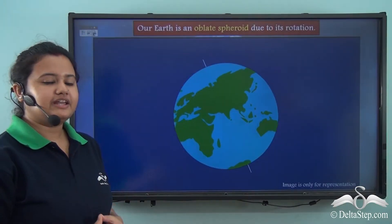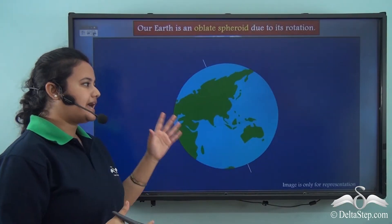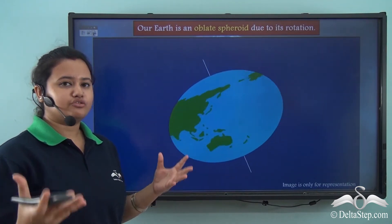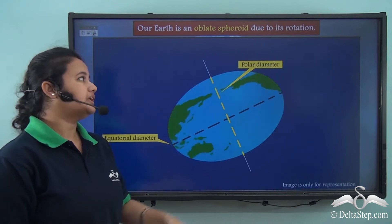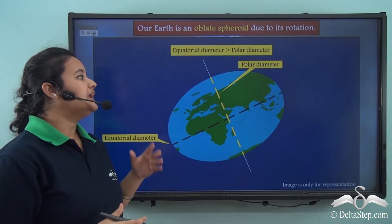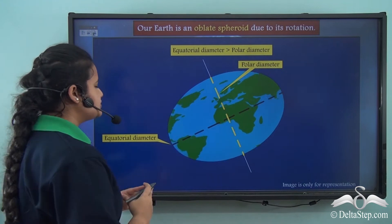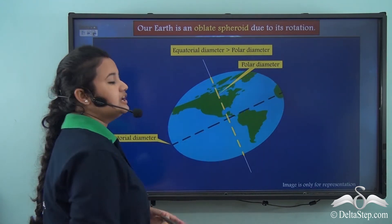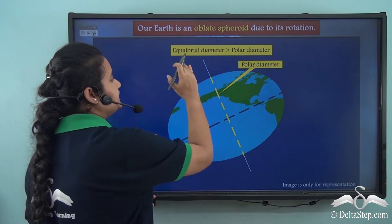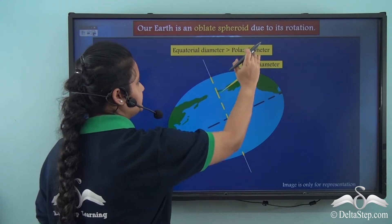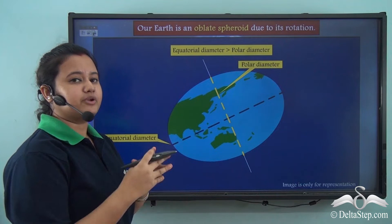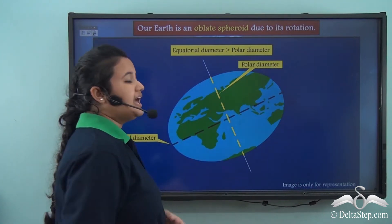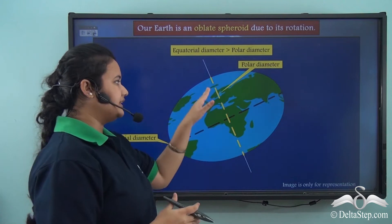Now similarly, when our earth rotates on its axis, centrifugal force is created, because of which our earth does not remain spherical or circular. The earth becomes bulged at the equator and it flattens at both the poles. So because of this, the equatorial diameter is greater than the polar diameter, because the centrifugal force is maximum at the equator and least effective at the poles.